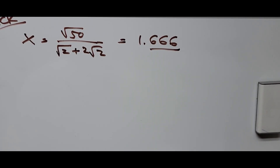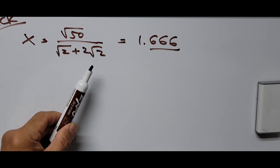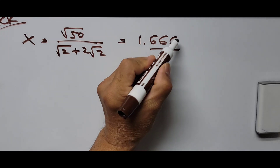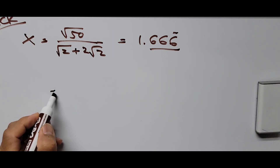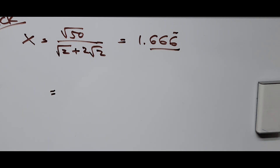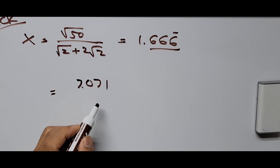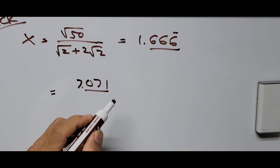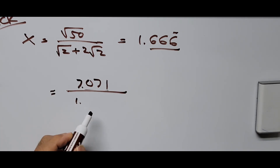Re-reading the original equation to check: x equals square root of 50 divided by (square root of 2 plus 2 times square root of 2), and our value of x — 5 thirds in decimal form — is 1.666 repeating. Using our calculator: square root of 50 is 7.071 (to 3 decimal places), and the square root of 2 is 1.414.